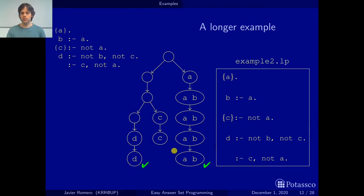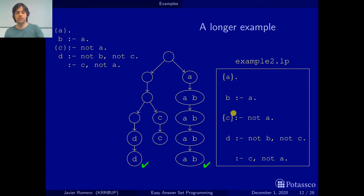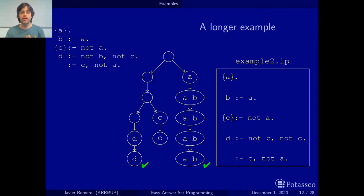Now, we can put it into a file — example2.lp — and write it according to our easy ASP methodology in one of the valid orderings. This way, we can easily understand the program because the answer sets are just the result of applying the rules in the order we have written them. It's also a natural way to write the program, like following a recipe.